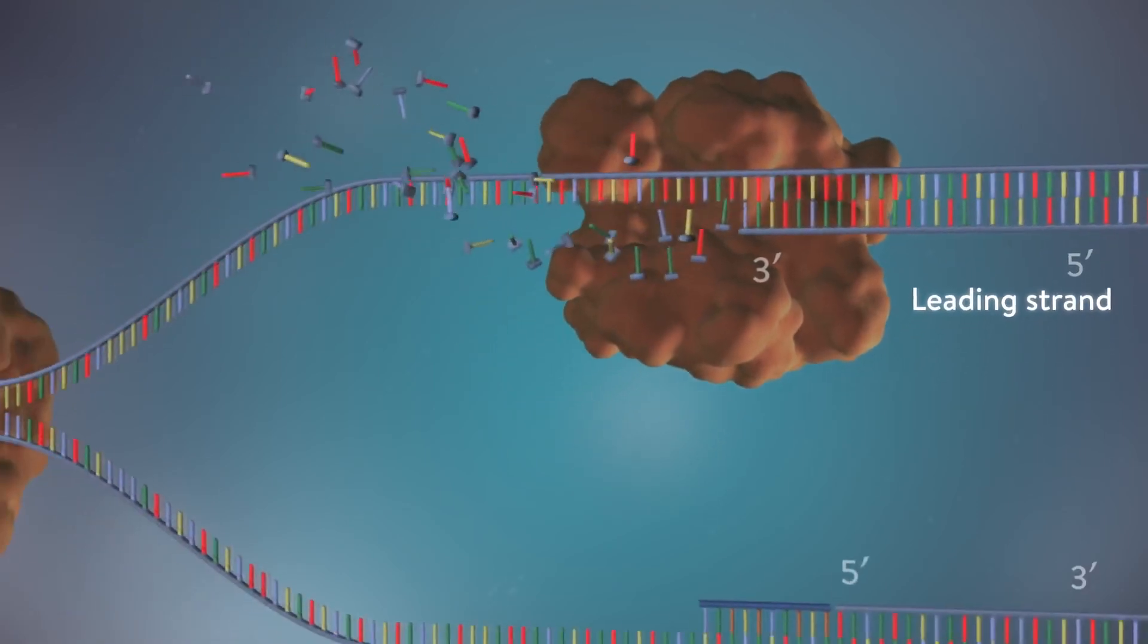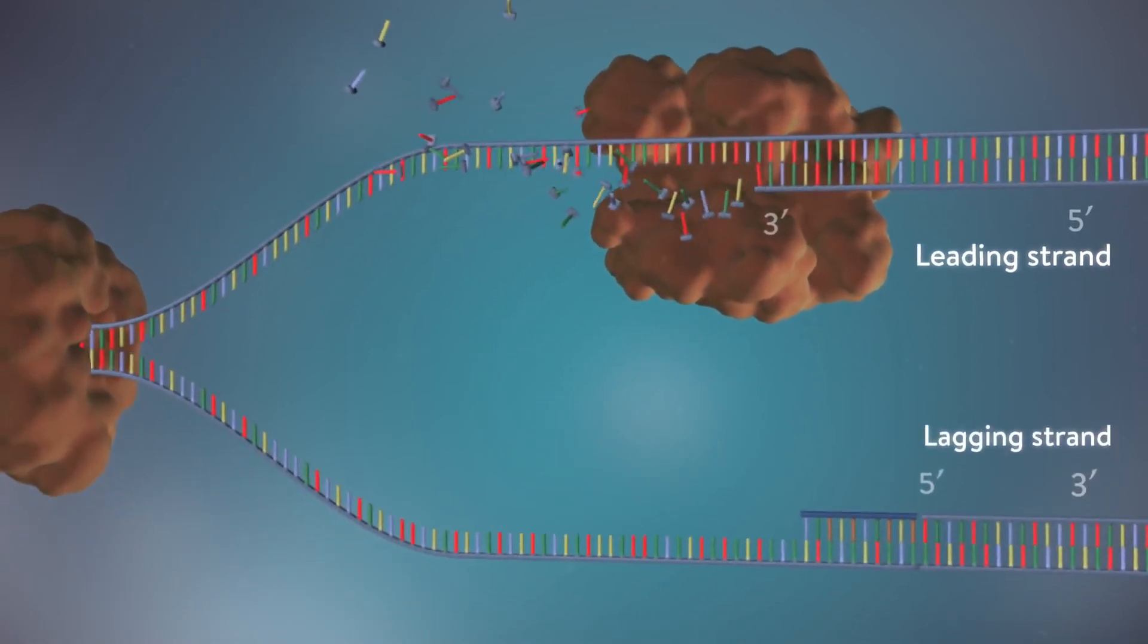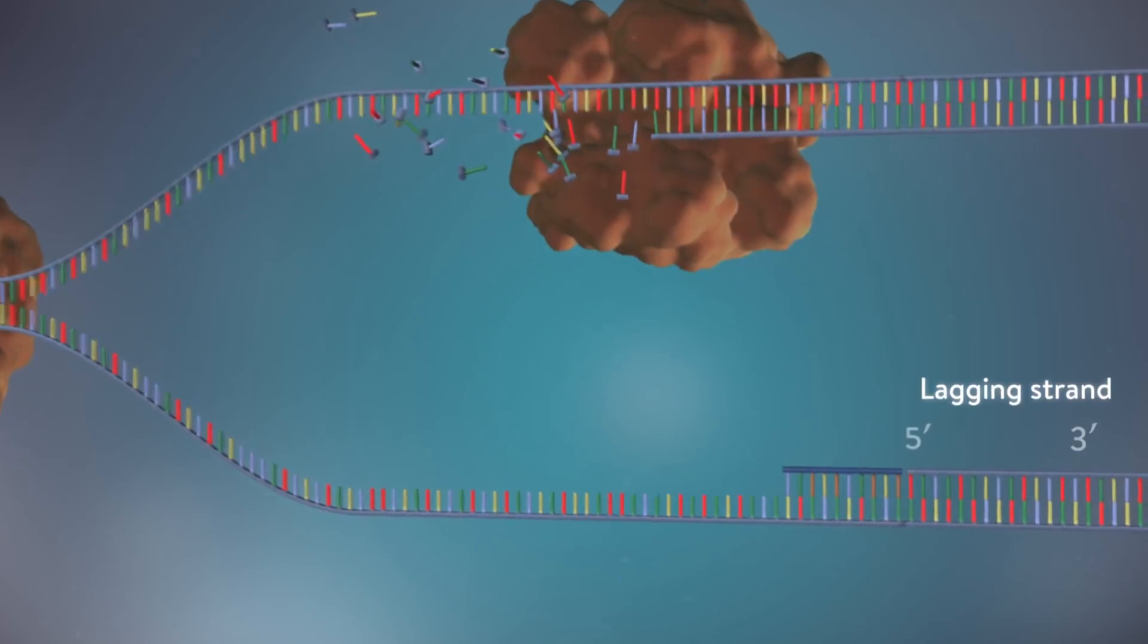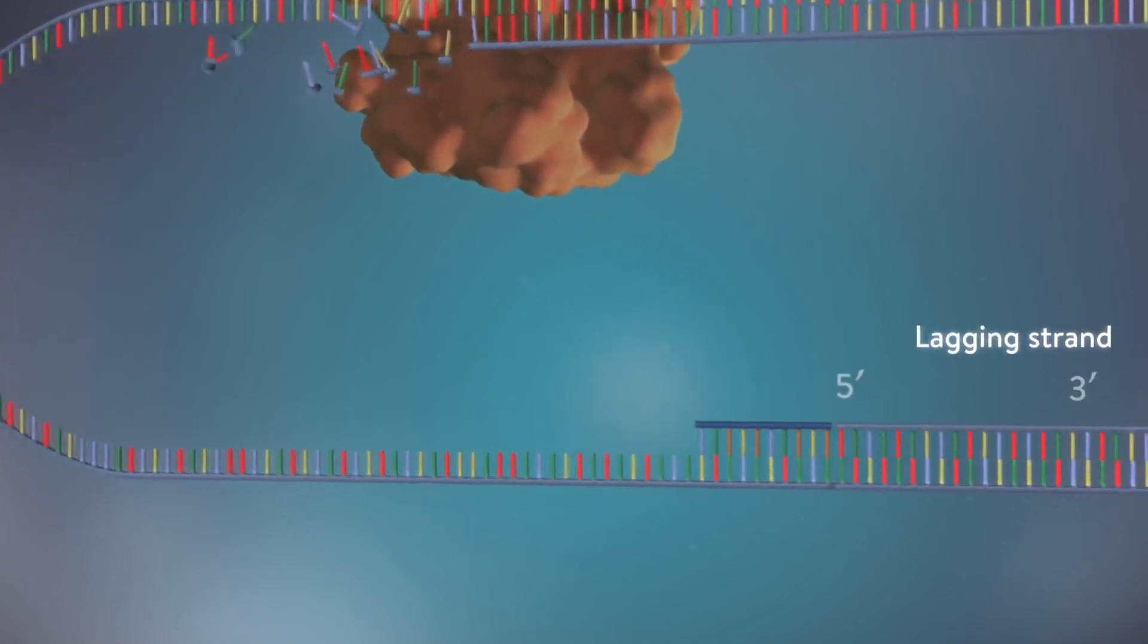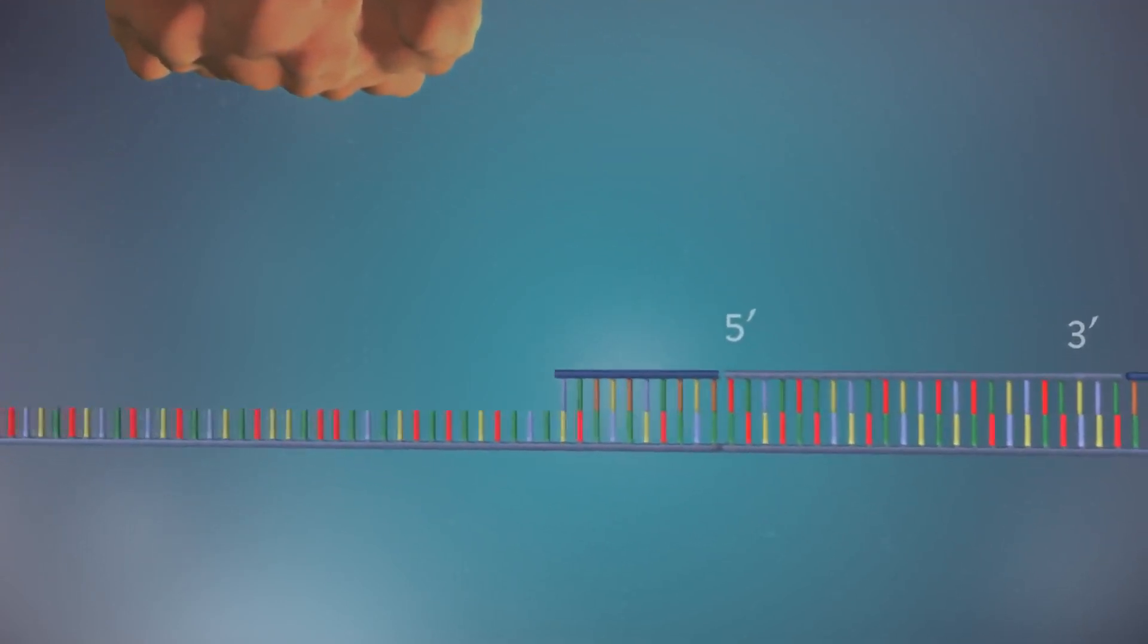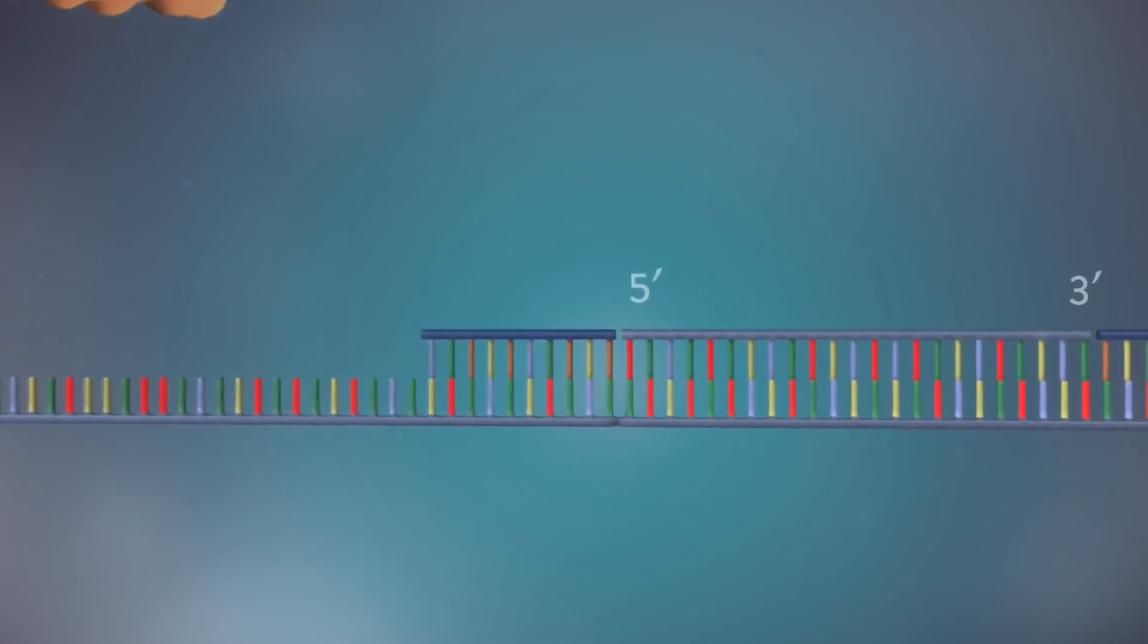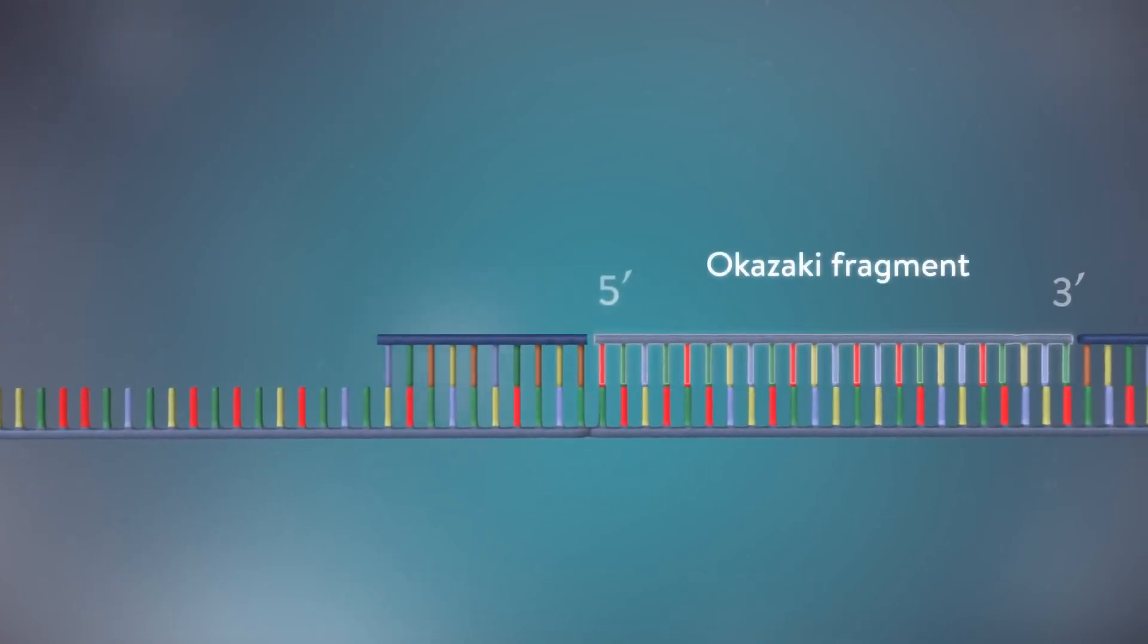The other strand, the lagging strand, cannot be made in this continuous way because it runs in the opposite direction. The DNA polymerase can therefore only make this strand in a series of small chunks called Okazaki fragments.